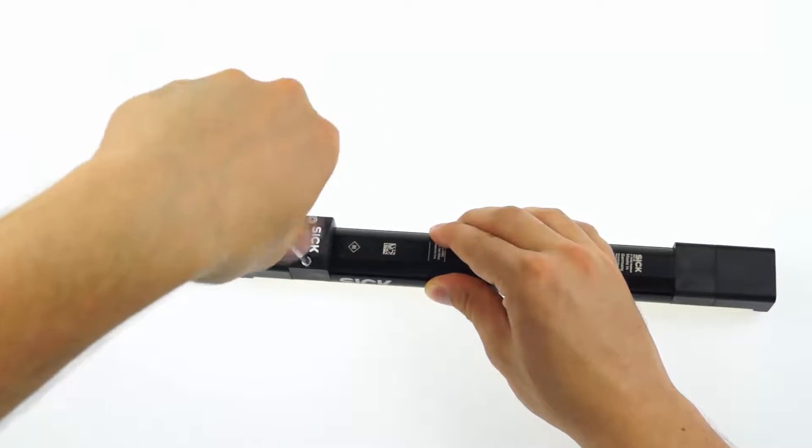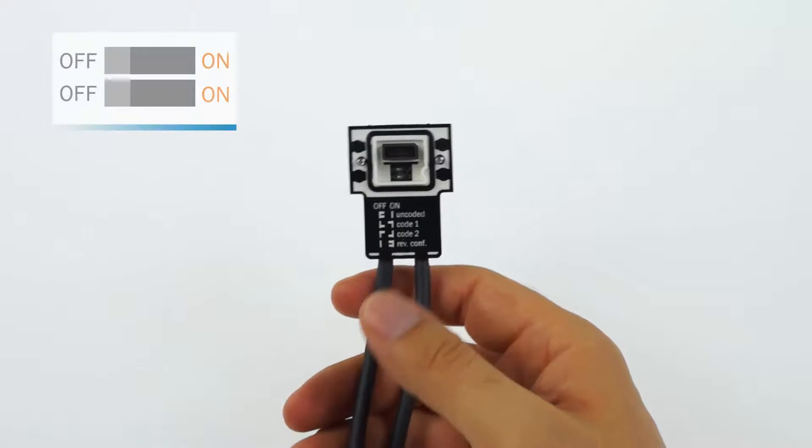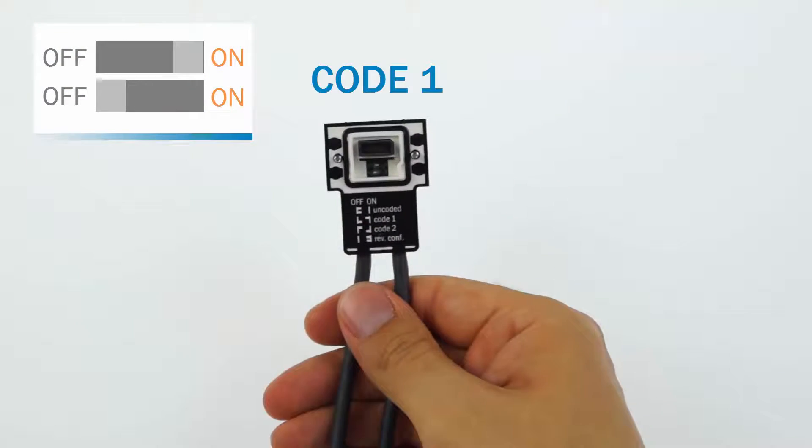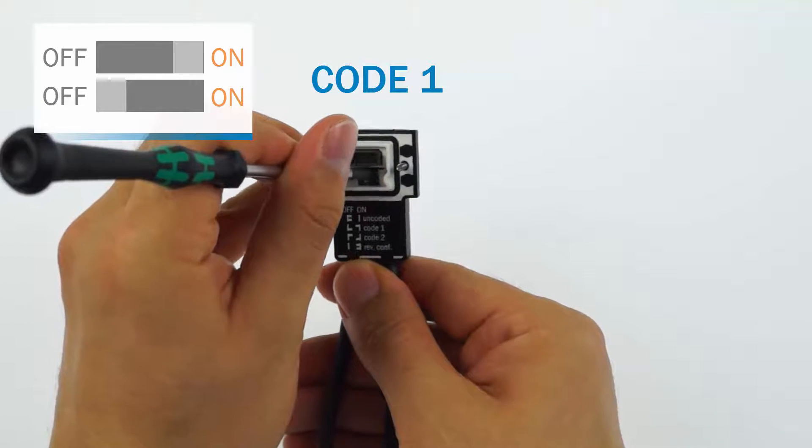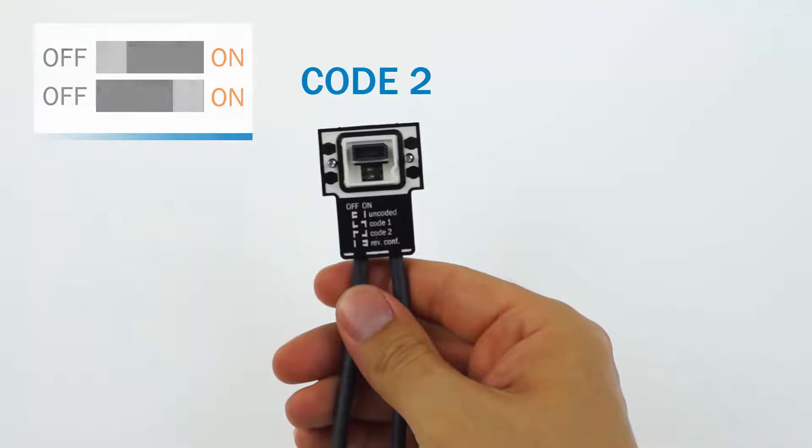Then detach the system plug by loosening the two retaining screws. On the system plug you find two DIP switches. With those switches you can set two different codes by either setting the first switch to ON and the second switch to OFF or vice versa. Make sure to code all corresponding devices accordingly.